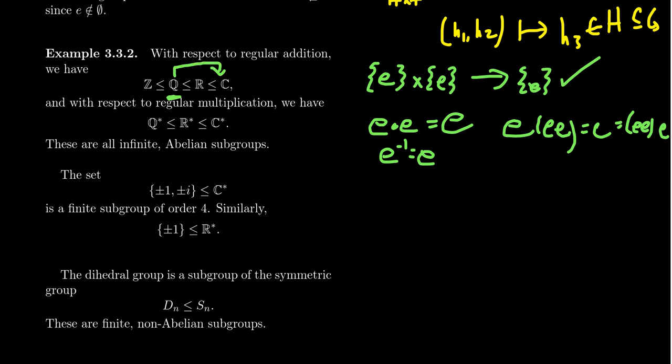Likewise, the rational numbers form a subgroup of the real numbers with respect to addition — every rational number is a real number and rational addition is a special case of real addition. There is also a transitivity principle: if Q is a subgroup of R and R is a subgroup of C, then Q is a subgroup of C as well. Similarly, every integer is a rational number, which is a real number, which is a complex number. So the integers with respect to addition form a subgroup of the rationals, a subgroup of the reals, and a subgroup of the complex numbers. Those are all examples of additive subgroups.